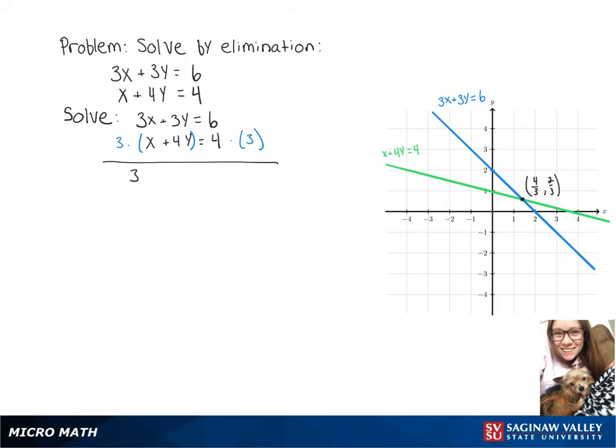Then we have our first equation, which is 3x plus 3y equals 6. And our second equation turns into 3x plus 12y equals 12.